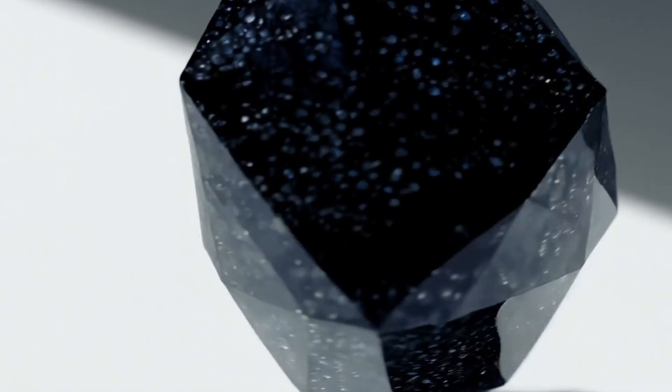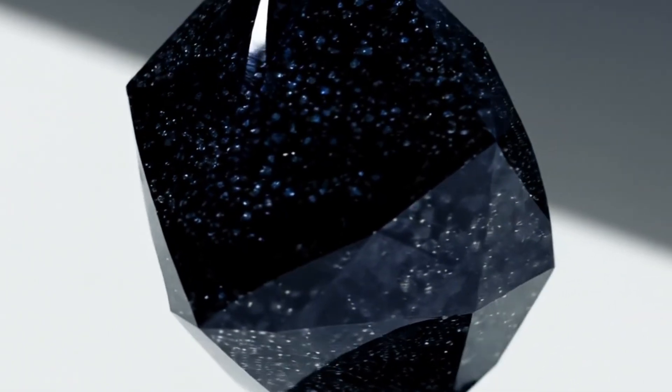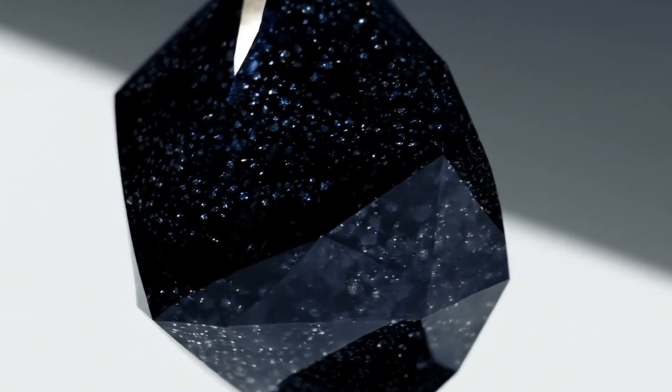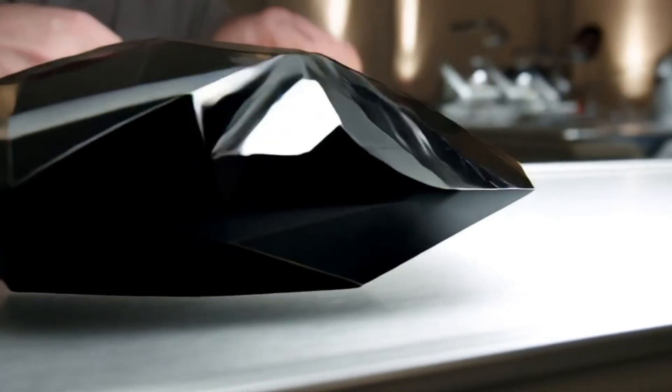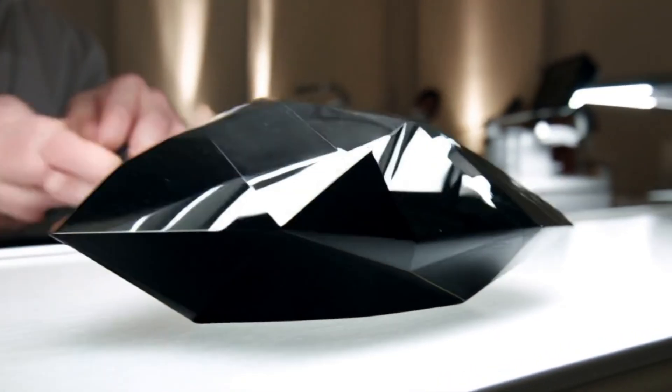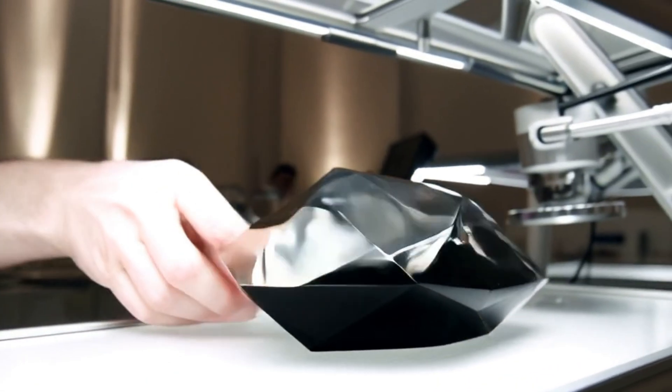Light Reflection: Black diamonds don't sparkle like clear diamonds. Instead, they reflect metallic or gray light. If your stone flashes rainbow colors, it's likely another gemstone like quartz or synthetic moissanite.